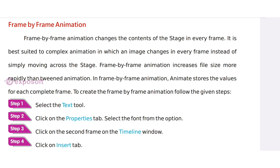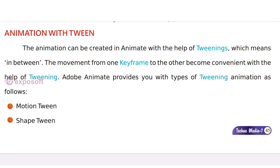Frame-by-frame animation changes the contents of the stage in every frame. It is the best suited for complex animation in which an image changes in every frame, instead of simply moving across the stage.